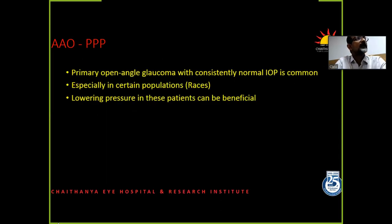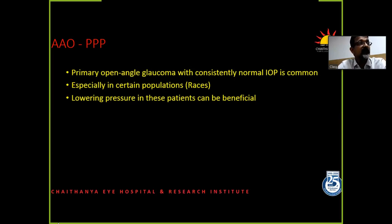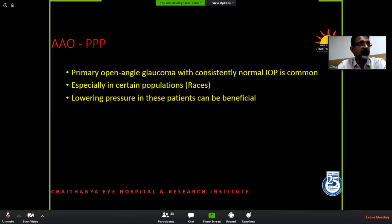Primary open-angle glaucoma can happen with normal intraocular pressure, especially in certain races — they have put African-Americans as being more at risk. But we know that NTG exists in our situation also. And even in these patients, lowering intraocular pressure is beneficial. When we say NTG, we are looking at pressures in the high normals quite often, rather than a genuine low normal like 10 to 8 causing glaucoma as such.